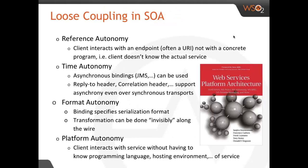Loose coupling has been known in reliable message queuing for at least four decades. SOA — service-oriented architecture — also brings loose coupling to a services world. Reference autonomy is achieved because a client interacts in SOA with an endpoint most often represented as a URI, but not with a concrete program. Time autonomy in SOA is achieved in at least two ways: first, WSDL binding allows you to specify asynchronous bindings so that communication takes place via message queuing, for example JMS.